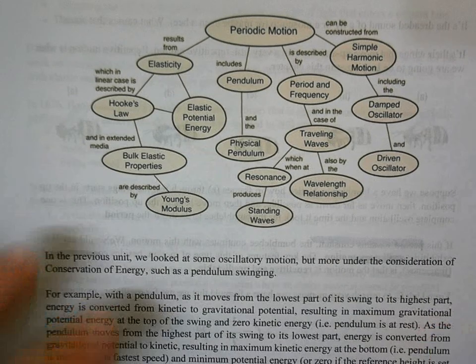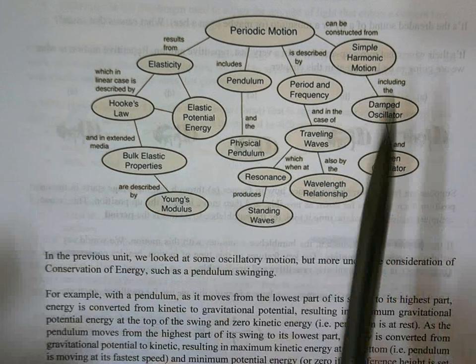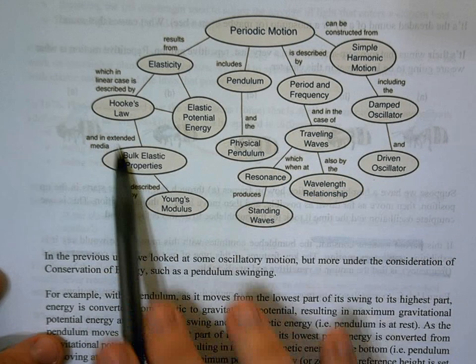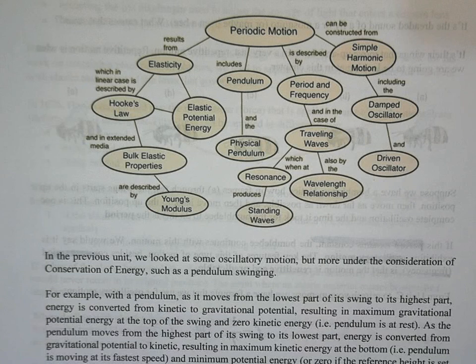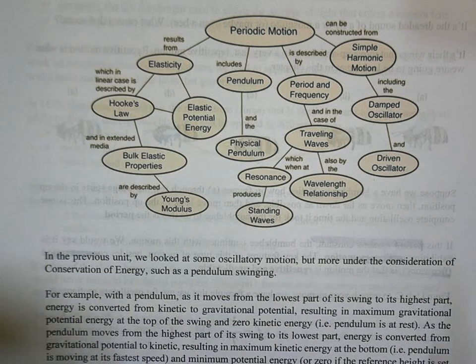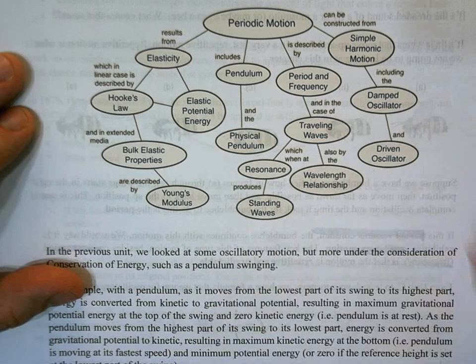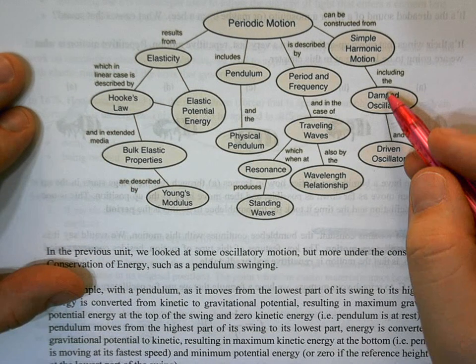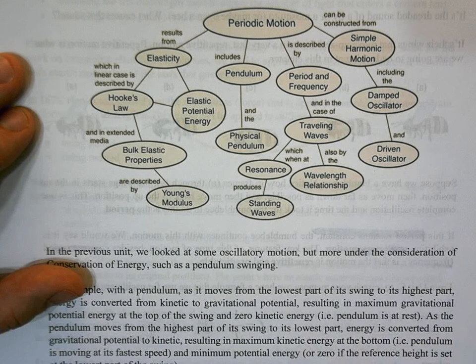So oscillatory motion or periodic motion is a really big category. So we're kind of starting here. And as you can see, we kind of go all over the place with it. So with this, I will show you what we're actually going to look at. With periodic motion, we are going to talk about simple harmonic motion. We will talk about damped oscillators and driven oscillators. We'll discuss what they are. We won't actually study them.